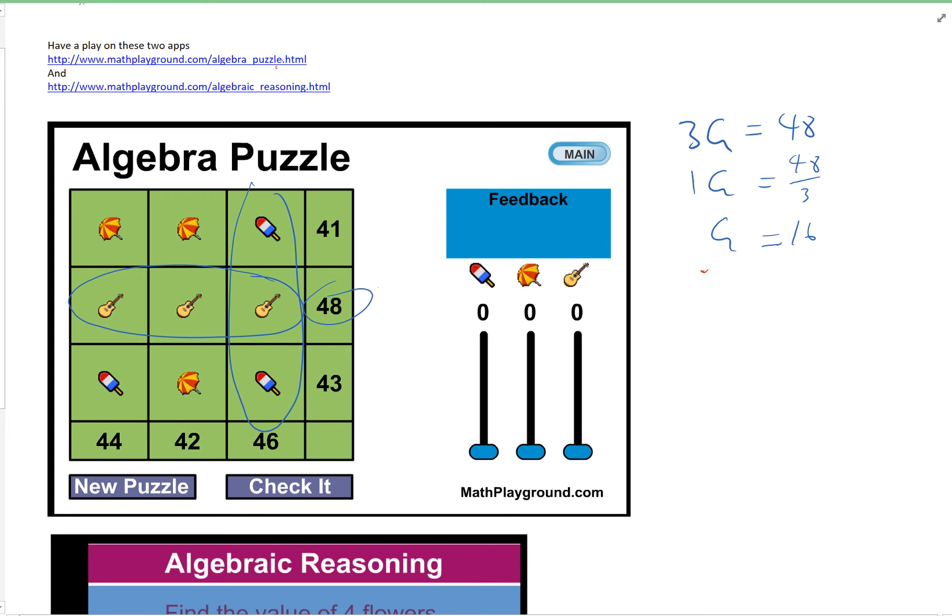Now what do I got if I look this way? I can see that I've got one guitar plus two ice blocks is equal to 46. Well, I know one guitar is equal to 16, so I've got 16 plus two ice creams is equal to 46.